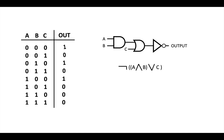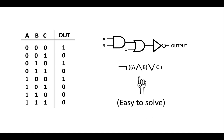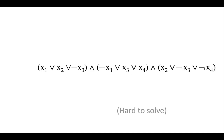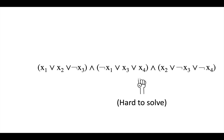Let's revisit our earlier example where we had three logic gates in a logic circuit. We used this Boolean expression, which was easy to solve. The satisfiable inputs for this are 000, 010, and 100. This is easy to solve even with pen and paper.